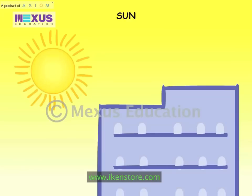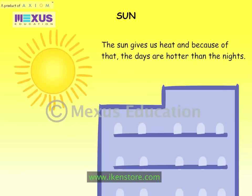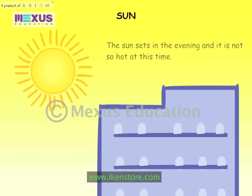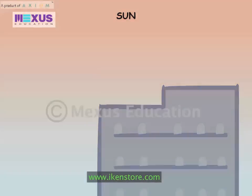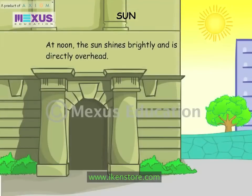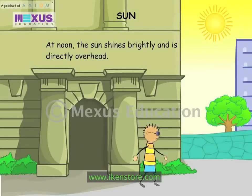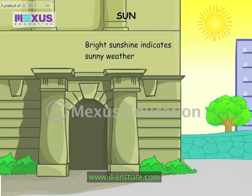The sun gives us heat, and because of that, the days are hotter than the nights. The sun sets in the evening and it is not so hot at this time. At noon, the sun shines brightly and is directly overhead. Bright sunshine indicates sunny weather.